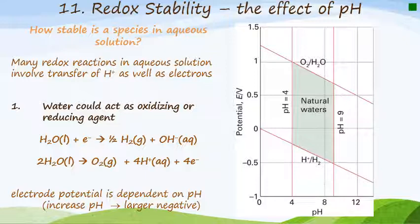In the first reaction, we see that water is reduced to hydrogen. And in the second reaction, we see that water is oxidized to oxygen. Therefore, the electrode potential for any reaction is going to be pH dependent.